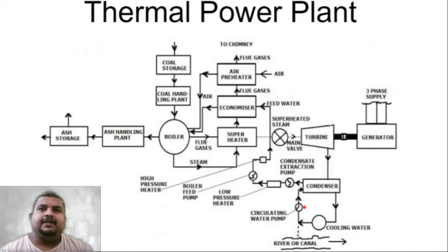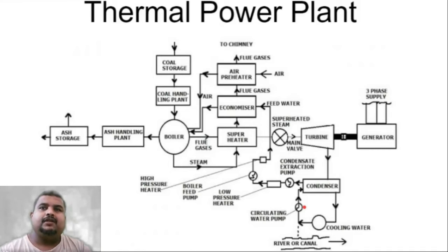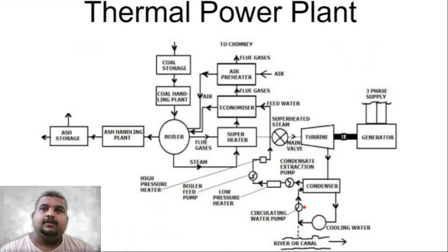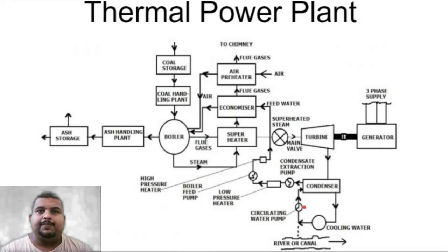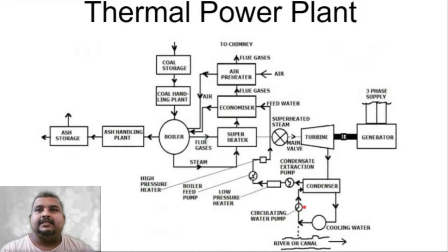There is also a deaerator, which removes dissolved air from the condensate — this is extra information. The boiler feed pump (BFP) is the highest pressure point in the whole system; its outlet pressure is greater than the boiler pressure. After the BFP, the water passes through the high pressure (HP) heater and then the economizer before entering the boiler.